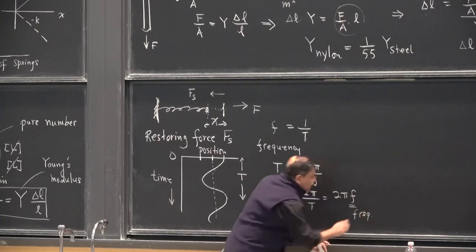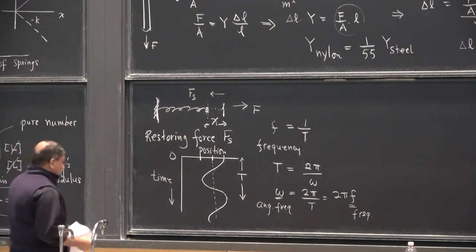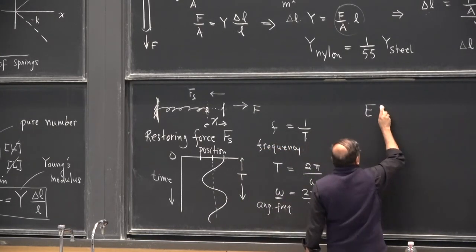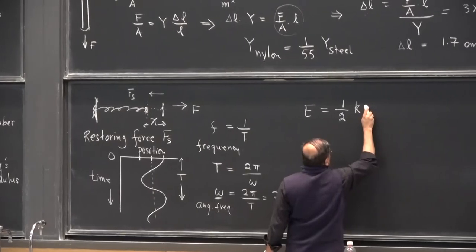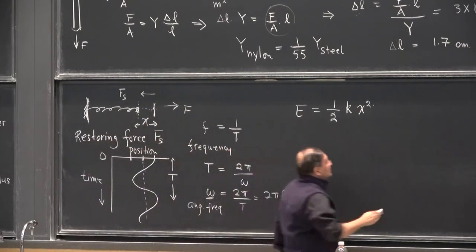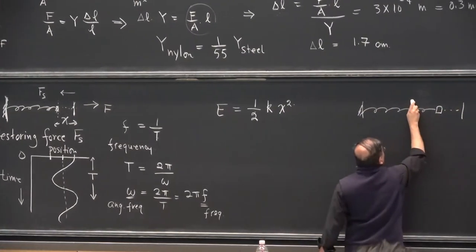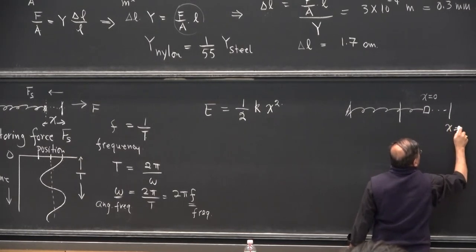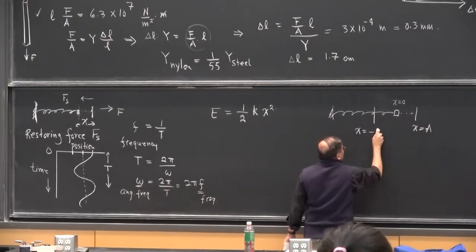Frequency has to be multiplied by 2 pi to give you the angular frequency — it's just how things are, and I'll come to the reason for it in a moment. You already know that if a spring has been stretched, its energy is ½k times x squared at the simplest level if the stretch is x. So if I make the spring such that x equals 0 is the center, x equals some amplitude A is the maximum stretch on the right, and x equals minus A is the maximum stretch on the left.